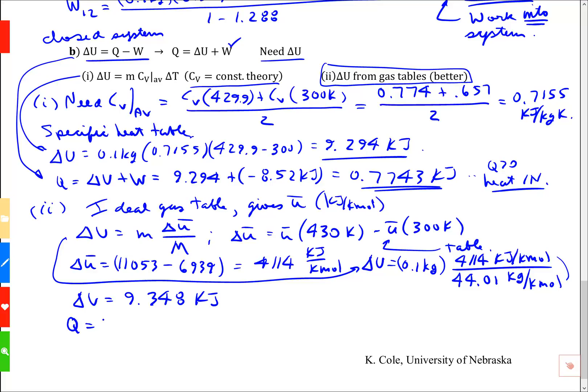Then finally, the heat is going to be delta u plus w, which is this delta u, 9.348, plus my work which was minus 8.52. When I compute that, I get 0.828 kilojoules. This is different than before.